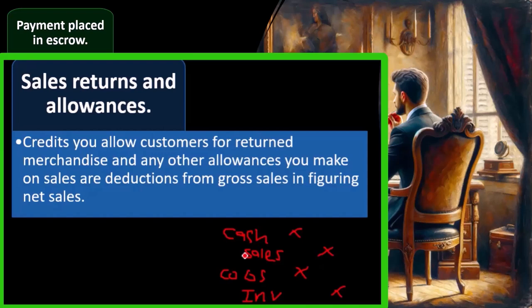We also have to pay the cash back, and inventory goes back on the books, creating basically a negative cost of goods sold. If the inventory is no good, we write off the inventory — that's the general idea.